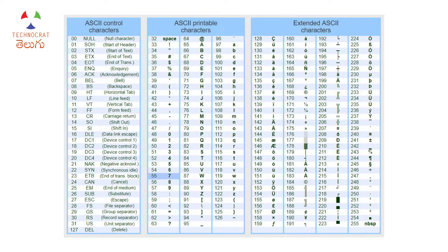Every printable character inside the printable character set is visible. When we start from 128, there are extended ASCII characters. The total with extended ASCII is 256 characters — we have many features in the extended character set.